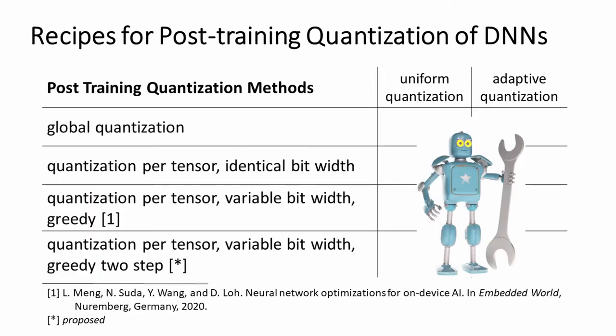In the paper we investigated four different ways of applying quantization: globally over the whole model; per tensor with identical bit width per tensor; per tensor with different bit widths per tensor applied in a greedy fashion; and quantization per tensor with variable bit width in a two-step approach introduced here. This was done for both uniform quantization and adaptive quantization.